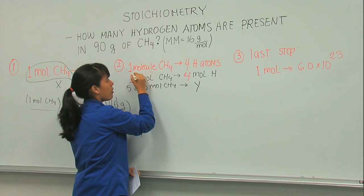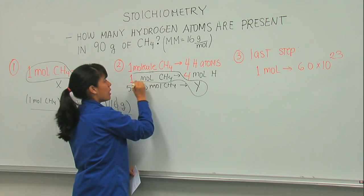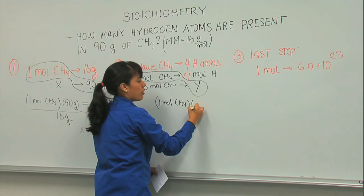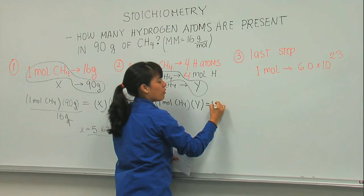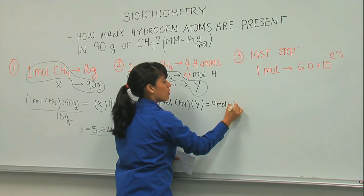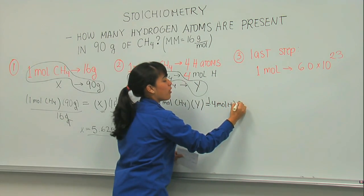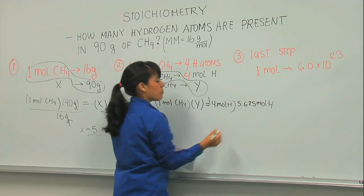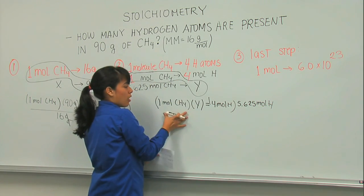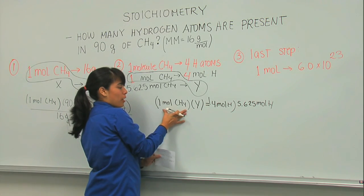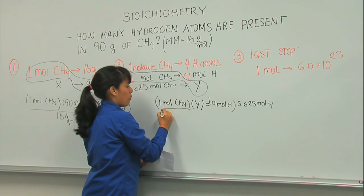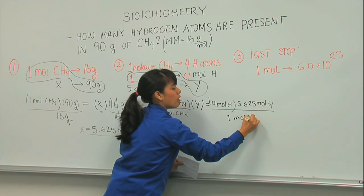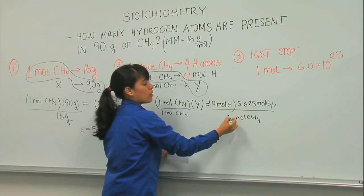So, I'm going to do the same method. Cross multiplication. One mole of CH4 times Y is going to be 4 moles of H times 5.625 moles of CH4. When you do the math again, you will need to divide by this. Because you want to find Y. And you have one mole of CH4 here. So you need to divide by this term on both sides to maintain the equality. And this is CH4. So you get rid of this.